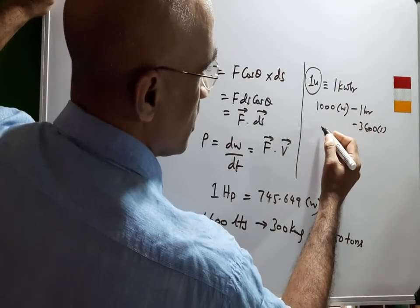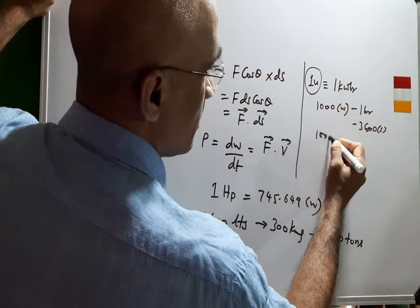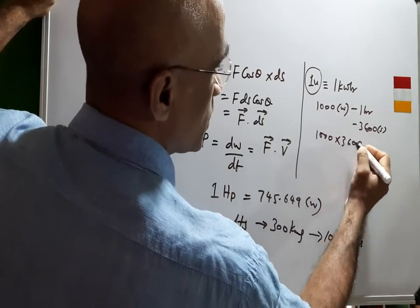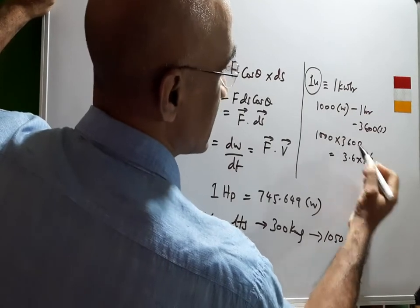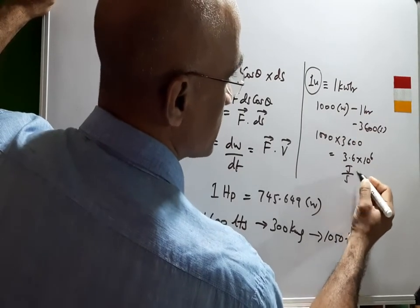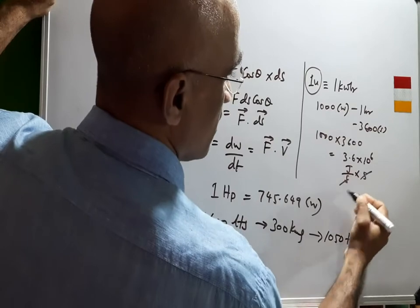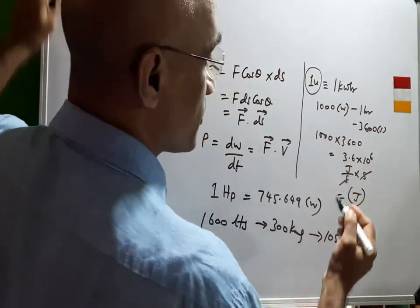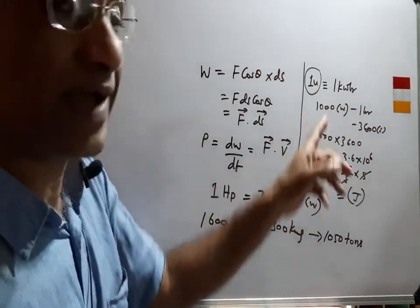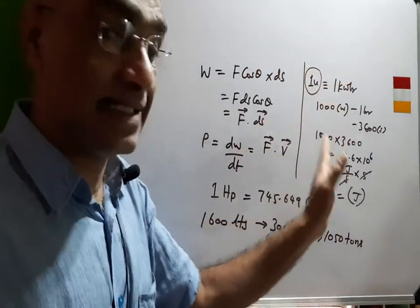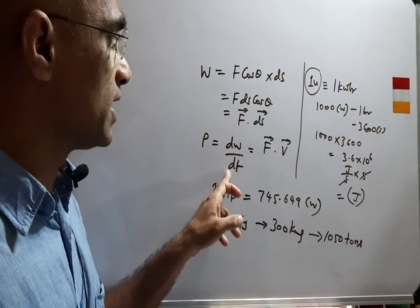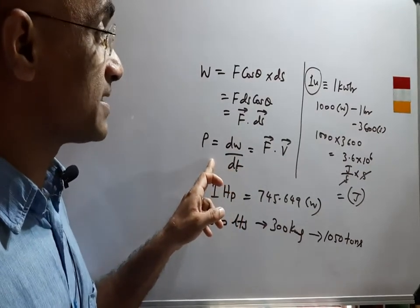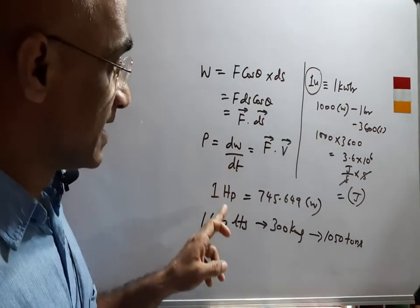That means I'm talking to you about thousand multiplied by 3,600, which will come to 3.6 × 10^6, the unit being watts, nothing but Joule per second. In the second will come to 3.6 × 10^6 Joules, which is the unit of energy.